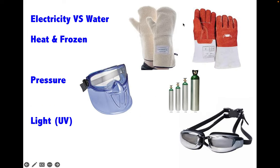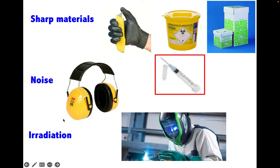To work safely, electricity must be kept away from water. Heat must be kept away from frozen equipment. Protection with appropriate PPE under these hazards is obligatory. For example, suitable gloves to handle hot and frozen items. Goggles, face shields, and spectacles must be worn against pressure and UV light. Sharp materials must be correctly handled or disposed of — do not recap uncapped needles. To protect your ears during sonication, ear plugs or ear muffs must be worn. When working under irradiation, suitable protection must be used.